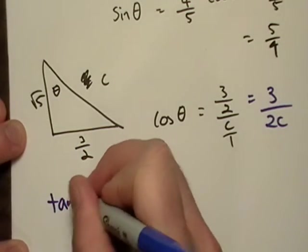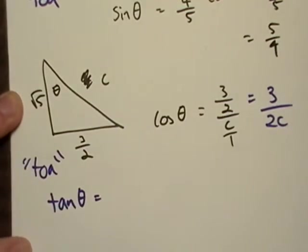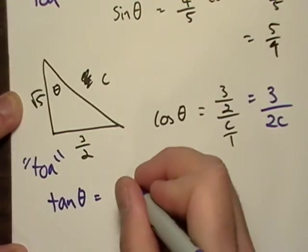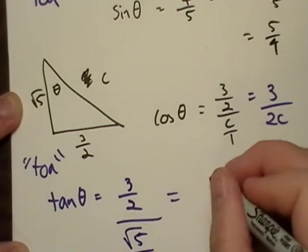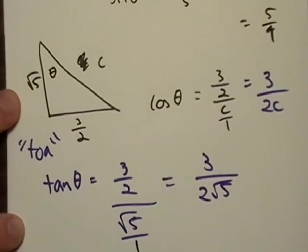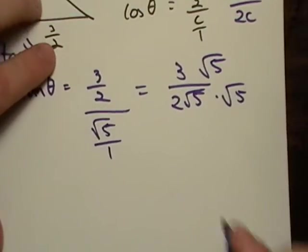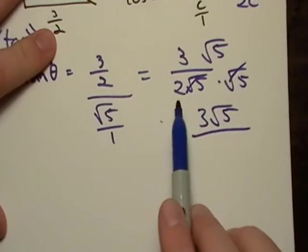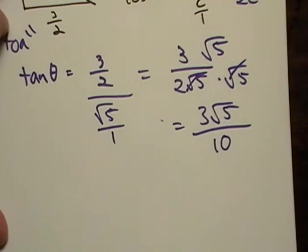Tangent theta — going back to TOA — that's opposite over adjacent. What's opposite of angle theta? That's three-halves. And we divide by the adjacent side, which is the square root of five. So this simplifies to three over two times the square root of five. We should rationalize the denominator, so multiply both sides by the radical. The square root of five squared cancels to five, times two is ten, giving us three-root-five over ten.